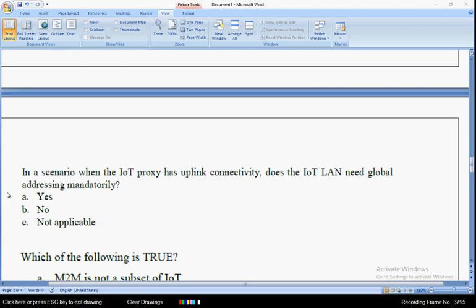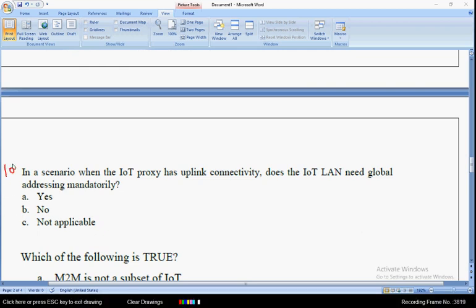Let's move on to the tenth question: in a scenario when the IoT proxy has uplink connectivity, does the IoT LAN need global addressing mandatory? The answer is no, simply no, option B, the second option.